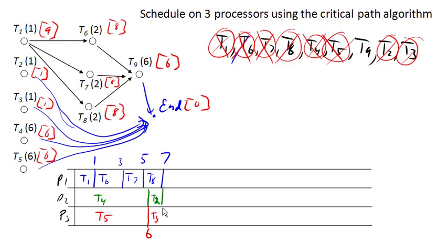And then at time 7, when all of those tasks get done, finally task 9 is ready, and we can assign it. And so we go ahead and assign task 9 here, and that has 6 units of time, which takes us out to 13. And there is our schedule.